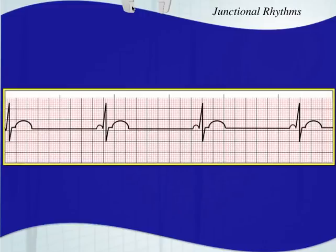Here is an upright P wave, but again you see a very short PR interval — almost no PR segment. There's no AV nodal pause. That's because the atria are depolarizing at almost the same exact time as the ventricles with a junctional rhythm.